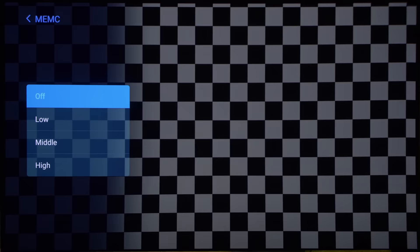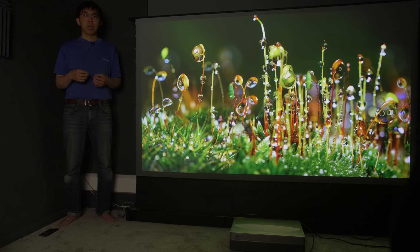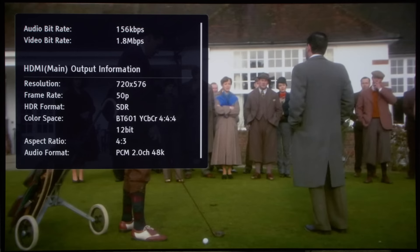Additionally, pushing MEMC all the way up to high could resolve stutter in 50Hz material, but you may see interpolation artifacts like shimmering or tearing in complex moving scenes. Otherwise, we witnessed odd frame skipping on the B5U regardless of source frame rate, but couldn't nail down the cause.